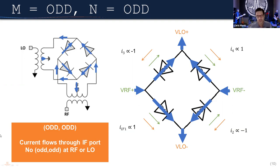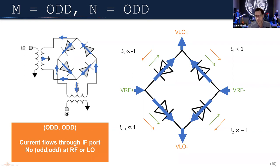For odd-by-odd products, the LO and RF ports are mutually isolated because the currents are in phase at those nodes, appearing at the delta port of the magic tee. This isolation is a key benefit of the double-balanced mixer. Critically, not just the 1×1 but all odd-by-odd products — the 3×1, 3×3, 5×3, and so on — will always appear at the IF. A double-balanced mixer cannot suppress odd-by-odd spurs.